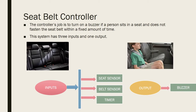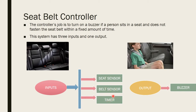To understand the State Machine clearly, consider the example of a Seat Belt Controller. Nowadays every car has a Seat Belt Controller. In case of accidents, wearing the seat belt causes less damage, so it is very essential. The Seat Belt Controller has three inputs and one output: the three inputs are a seat sensor, a belt sensor, and a timer; the output is a buzzer sound.